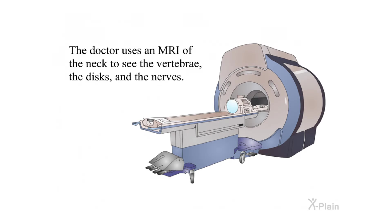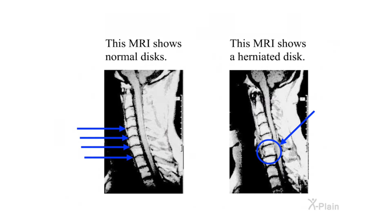The doctor uses an MRI of the neck to see the vertebrae, the discs, and the nerves. This MRI shows normal discs, and this MRI shows a herniated disc.